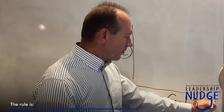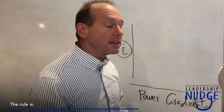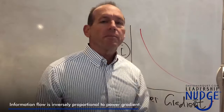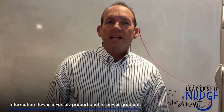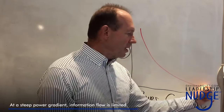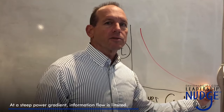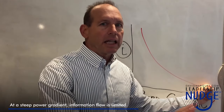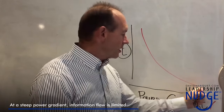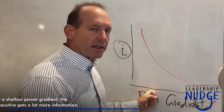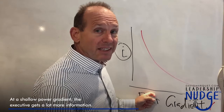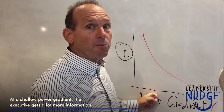The rule is: information flow is inversely proportional to power gradient. Up here, those executives who have walled themselves off are not getting a lot of information from the organization. Down here, the executive who sits out in the open space is getting a lot more.